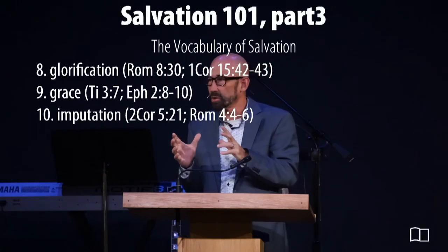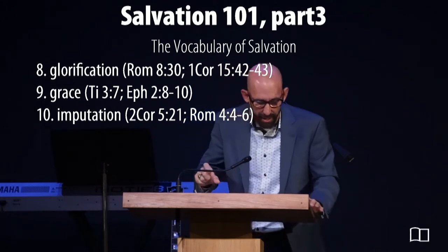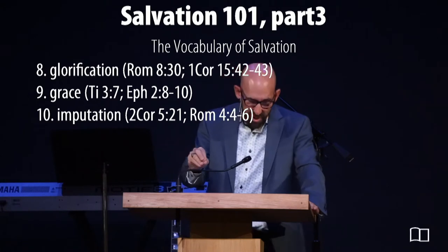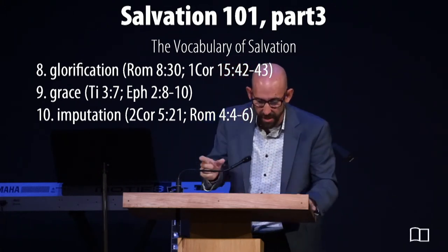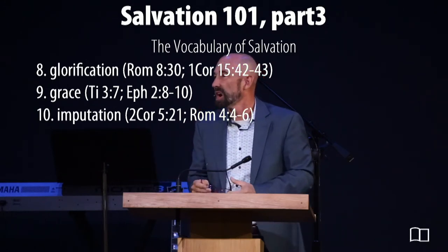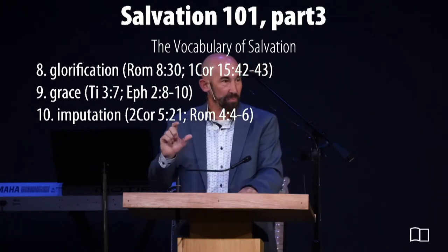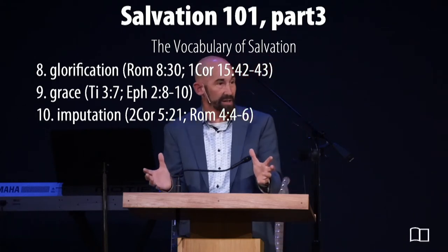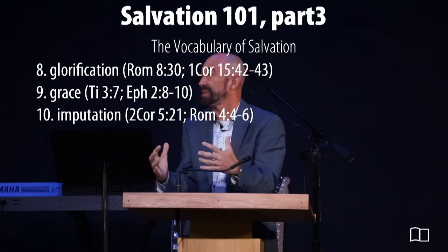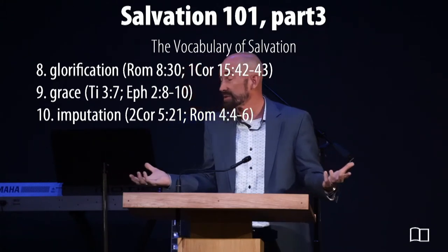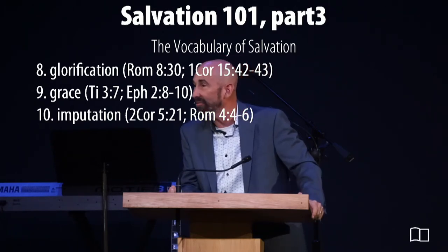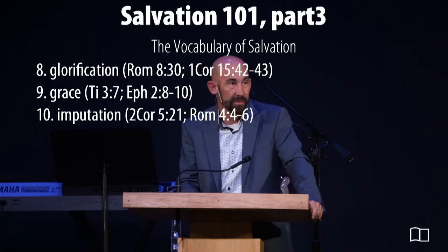The next word is imputation — an accounting term of crediting one thing to another account. God credits to believing sinners the perfect righteousness of Jesus Christ — that's positive imputation. Negative imputation means God credits to Jesus at the cross all the unrighteousness of every believer. When Jesus went to the cross, the past, present, and future sins of everyone who believes were placed by the Father on Christ so that he was truly the sin bearer — as 2 Corinthians 5:21 says, he became sin on our behalf, so that we might become the righteousness of God in him.